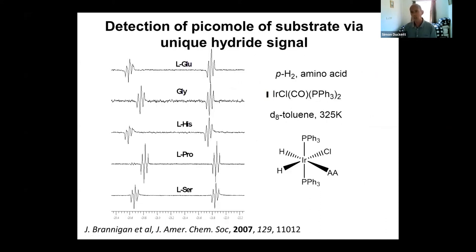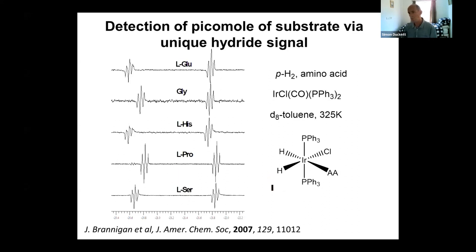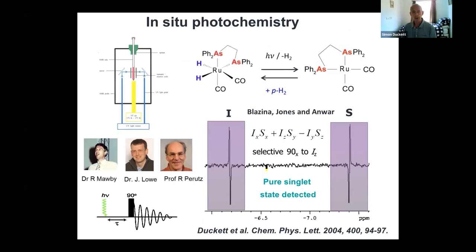You can see here an example of parahydrogen adding to a metal complex, and what we're looking at are these enhanced resonances in the metal complex. In this case, the chemical shift difference of these metal hydride resonances is diagnostic of the ligand that's binding at the sixth site in our iridium complex. So we can use this signal enhancement productively to see new materials.